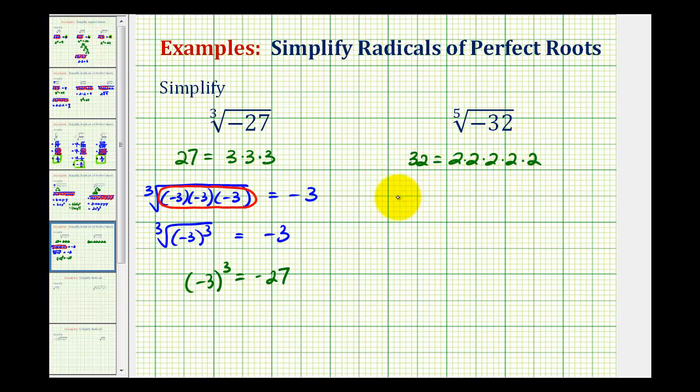So again, we could rewrite the fifth root of negative 32 as five factors of negative 2. And because the index is five, and we have five equal factors, this simplifies perfectly to one of the factors of negative 2.